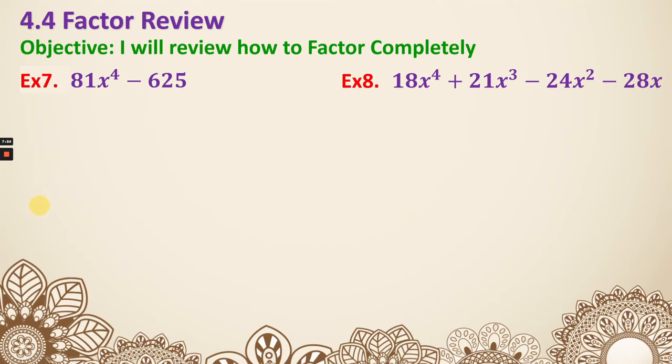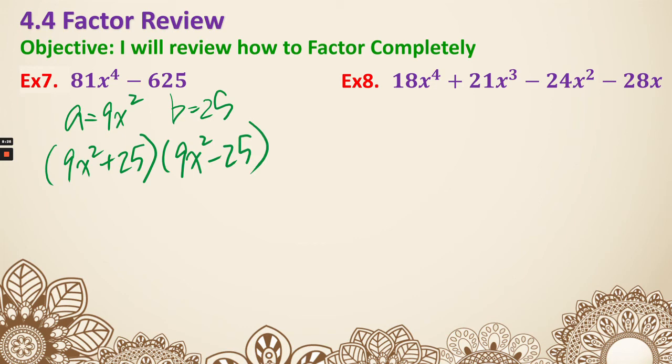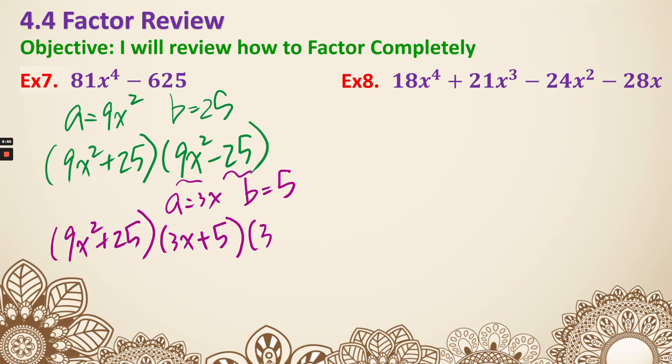Example 7. 81x to the 4th minus 625. We have two terms and they are both perfect squares, so that means we need to find our a and our b. Our a is going to be 9x squared, it's basically the square root of 81 and square root of x to the fourth power. Our b is the square root of 625, which is 25. So we have a plus b, so 9x squared plus 25, and we also have a minus b, so 9x squared minus 25. Here we have 9x squared plus 25, they're plus so we cannot do anything. For the second parentheses, that's a perfect square and that is a perfect square. We have another a and b: 3x and b is 5. So that means we can keep the front. The back will factor to be a plus b, which is 3x plus 5, and a minus b, which is 3x minus 5.